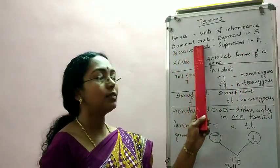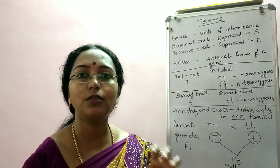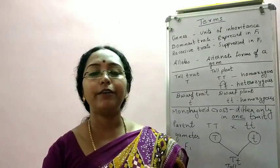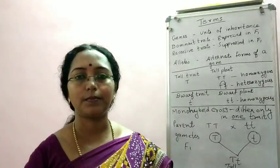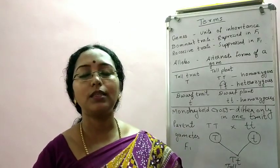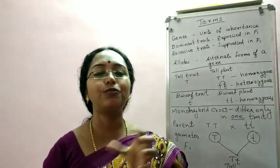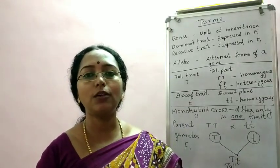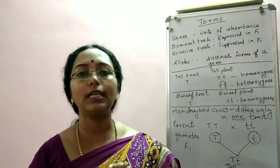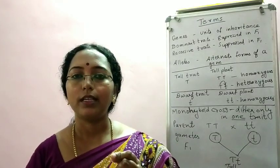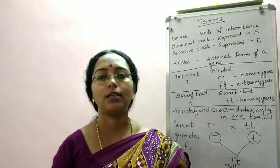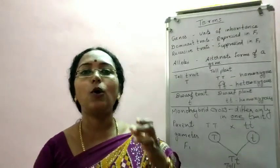The next term is dominant trait. From the word itself you can understand — those traits which are expressed in the F1 generation are dominant traits. In the last session, we got familiarized with those seven characters and their two forms, and he did crosses keeping one character different at a time. From those crosses, he got only one character expressed in the F1 generation, and all those forms expressed in the F1 generation are called dominant forms.